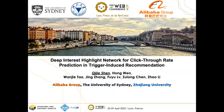Hello, everyone. My name is Qijie Shen, and I am an algorithm engineer from Alibaba Group. Today, I will talk about our new work, Deep Interest Highlight Network for Click-Through Rate Prediction in Trigger-Induced Recommendation. This is a joint work with my colleagues Hongwen, Wanjietao, Jing Zhang, Fu Yudu, Zulongchen, and Zhao Li.